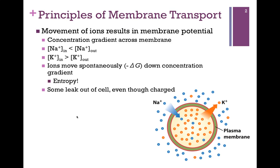We'll talk in a later lesson about how we establish this concentration gradient. For now, let's assume we have already established it and want to see how this contributes to a difference in charge — a membrane potential — across that membrane. Sodium concentration is much higher outside the cell, whereas potassium concentration is much higher inside the cell. If we allow those ions movement by opening a door so they can move across the membrane in either direction, they will move spontaneously down their concentration gradient.